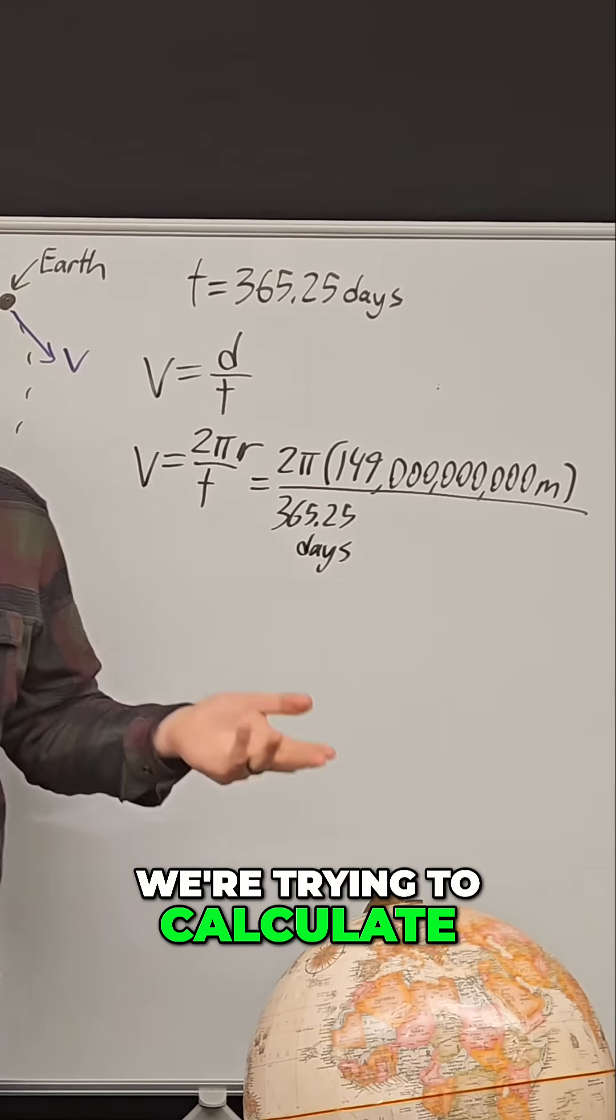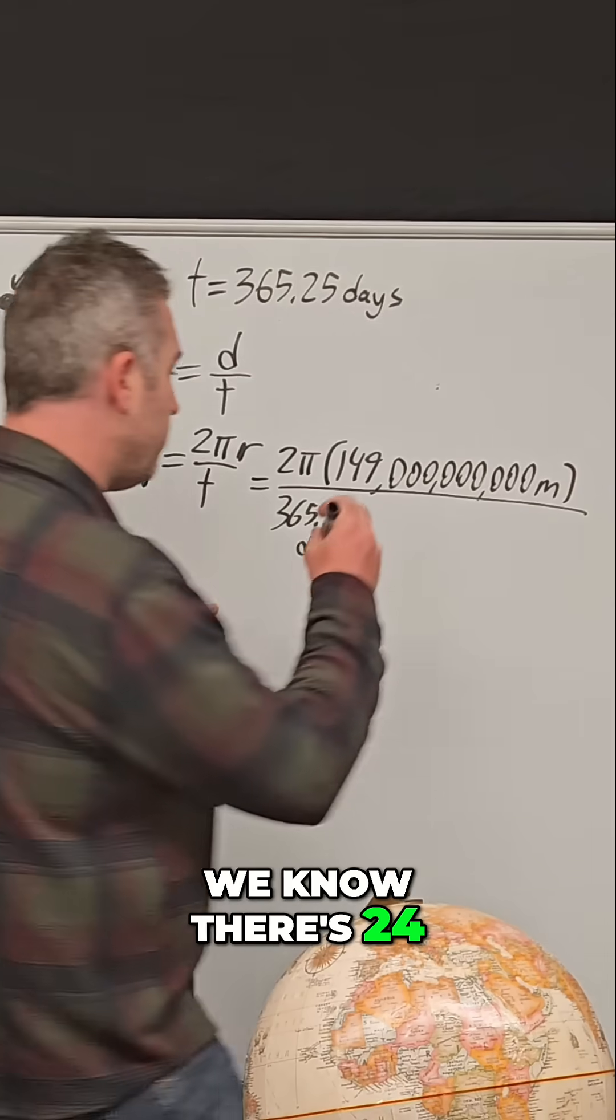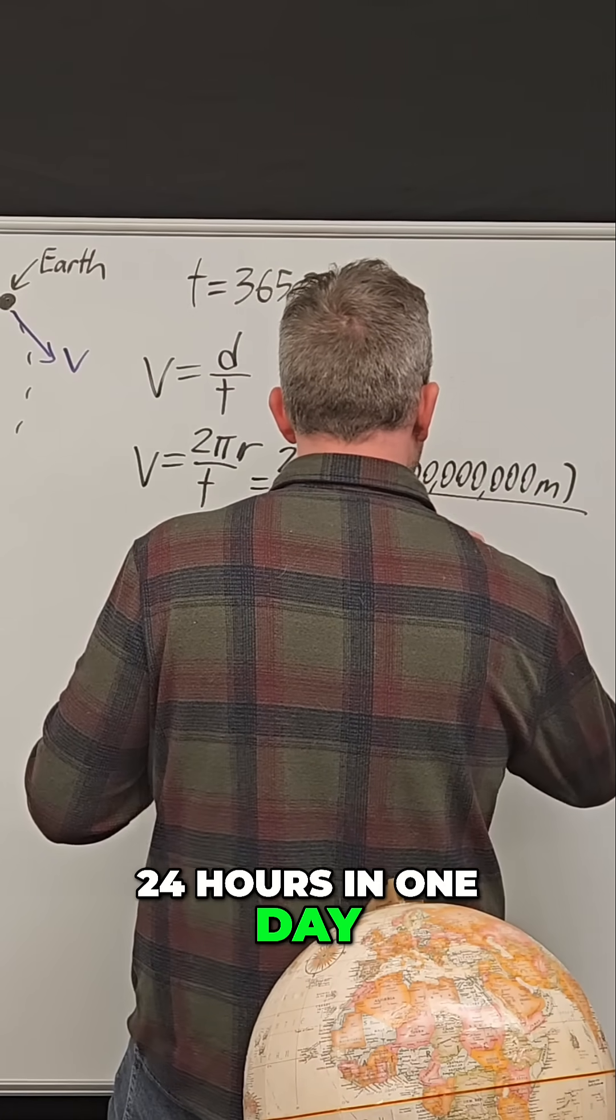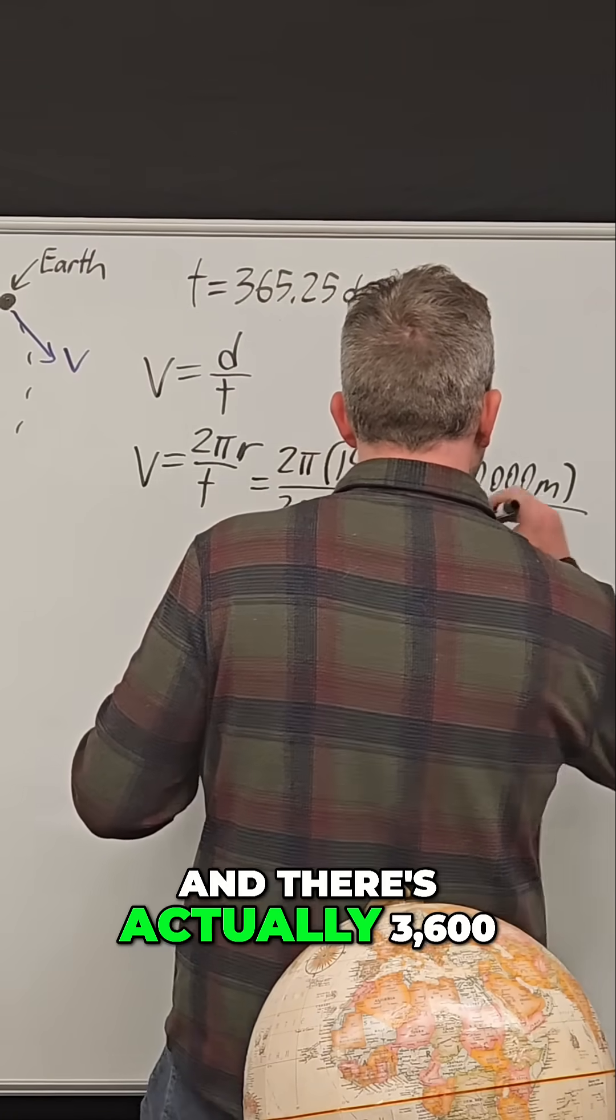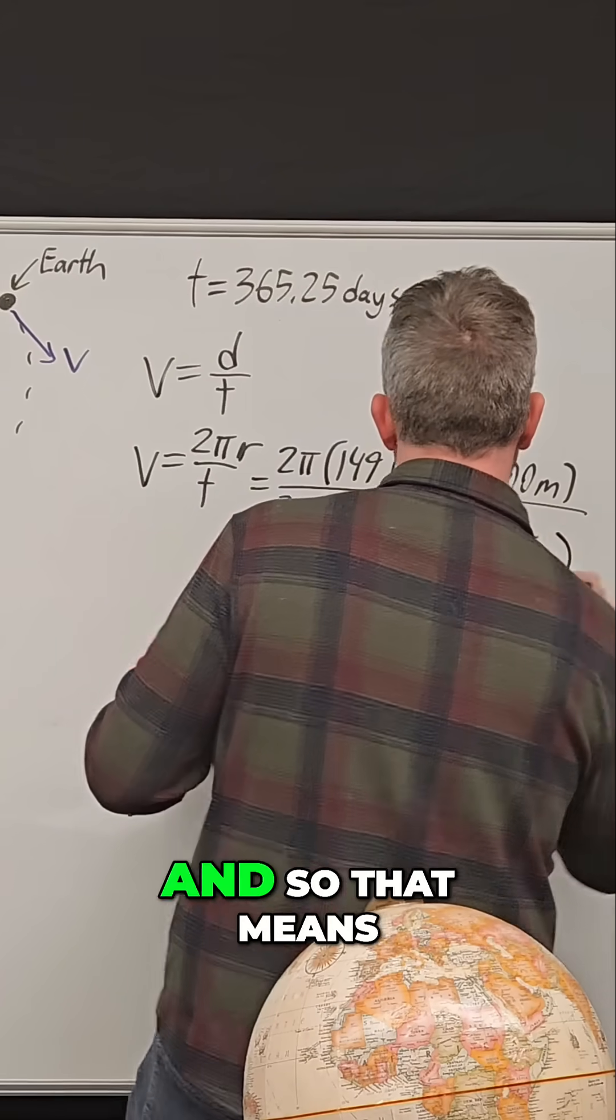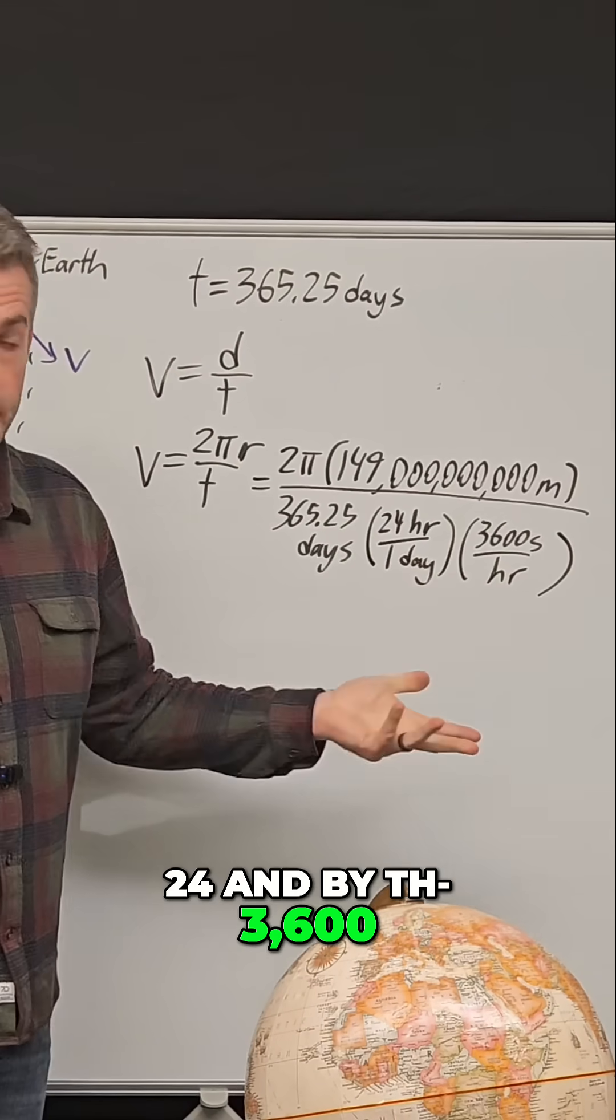For a velocity, we're trying to calculate meters per second. So that means this time needs to be in terms of seconds. We know there's 24 hours in a day, right? 24 hours in one day. And there's actually 3,600 seconds per hour. And so that means this bottom term has to be multiplied by 24 and by 3,600.